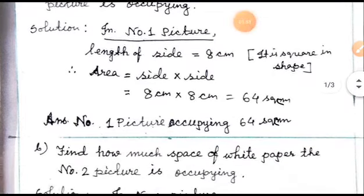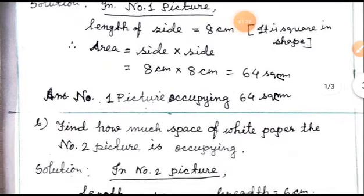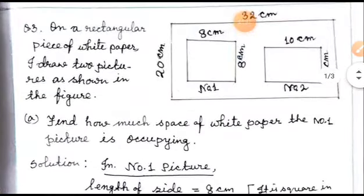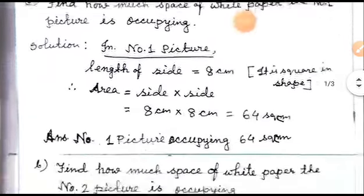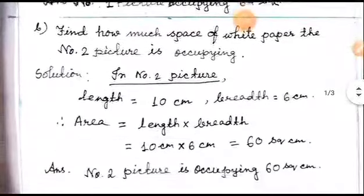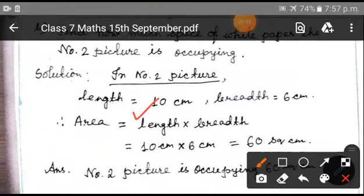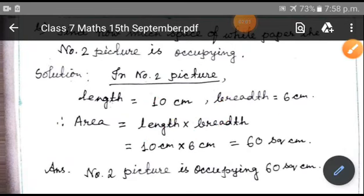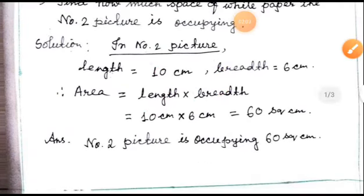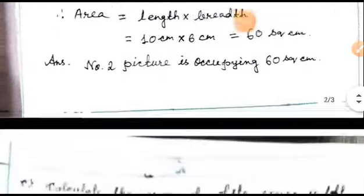The next question is: find how much space of white paper picture number 2 is occupying. So children, just have a look at the diagram. You can see picture number 2 is a rectangle having length 10 centimeters and breadth 6 centimeters. When the length and breadth are given, you can easily find the area of the rectangle. Area equals length into breadth, that is 10 centimeters into 6 centimeters, which is 60 square centimeters. Picture number 2 is occupying an area of 60 square centimeters.